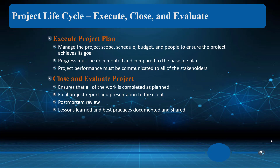How are we doing? What's going on? I want to communicate and make sure that my team agrees. Execute project plan — how we do the work, when we're going to do the work. Progress must be documented compared to the baseline plan. We have this plan, and we want to start a subset of that document: we said this would be done on Tuesday, but let's note it was done on Wednesday, and that put us one man-day behind schedule. Why did that happen?